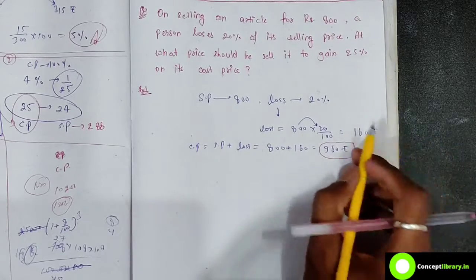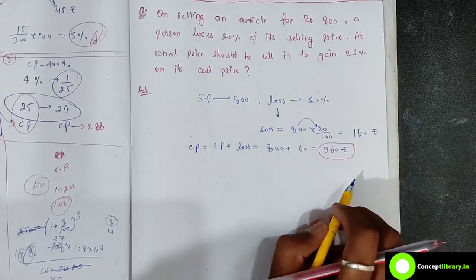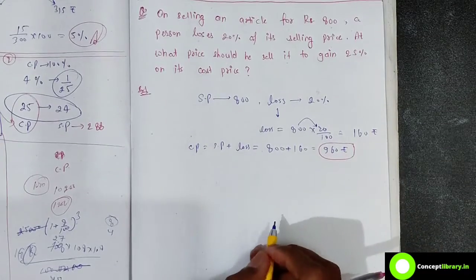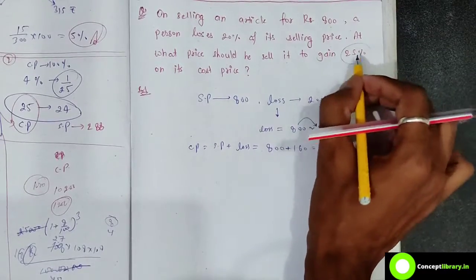25% gain - how much should the price be? 25% gain is on cost price.